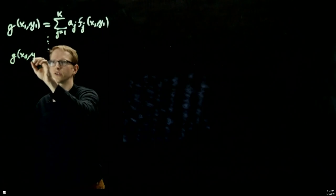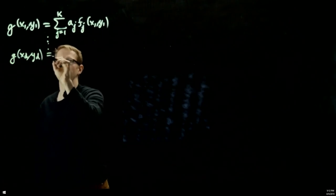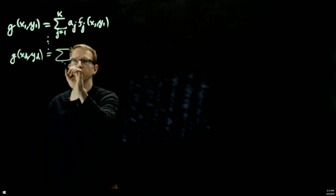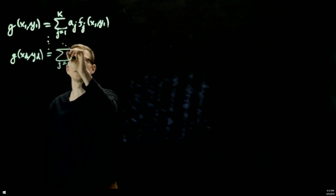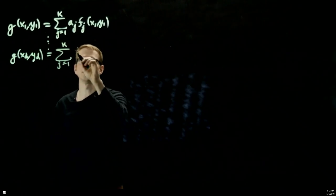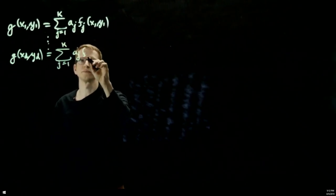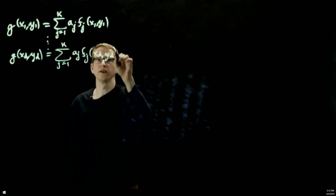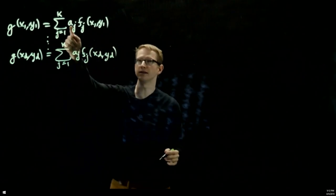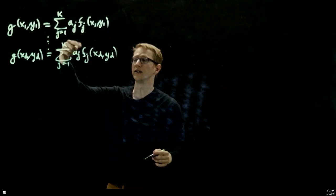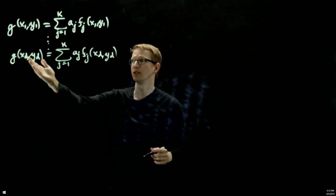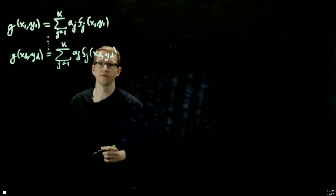So here I'm using the same exact function, and there are d many equations because we have d data points, and in this case we have k functions f and one function g here. But the same assumptions hold, namely that we are assuming that these constants, the aj's, are independent of each other, and the functions, the f's and the g's, are linearly independent of each other.